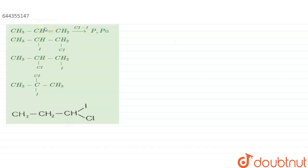Hello everyone, the question is, we have been given a reaction that is CH3-CH double bond CH2 in presence of CLI gives a product P.